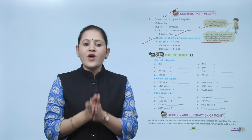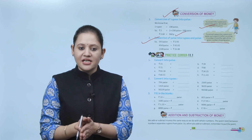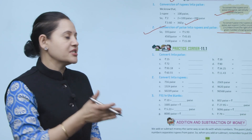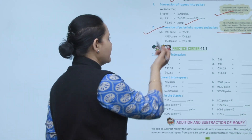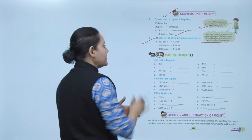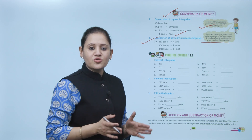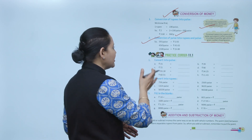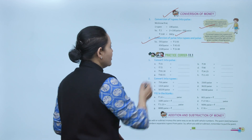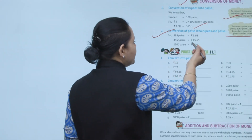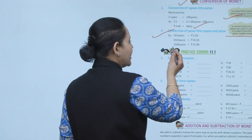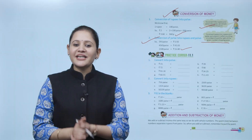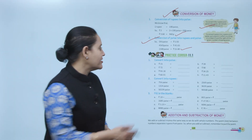To convert paisa into rupees, start from the right-hand side, count two digits, and put a decimal there. For example, 593 paisa equals rupees 5.93. Similarly, another example gives rupees 45.65, and another gives rupees 15. Next is practice corner 11.1: convert to paisa.